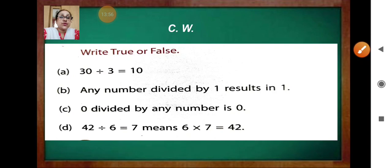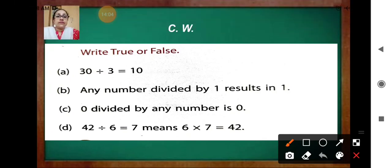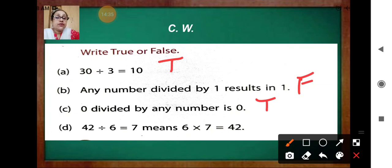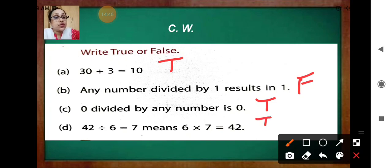Now, write true or false. Question A: thirty divided by three equals ten — three tens are thirty, so true. Question B: any number divided by one results in one — false. Question C: zero divided by any number is zero — true. Question D: forty-two divided by six equals seven — six sevens are forty-two, so true. Answers: true, false, true, true.